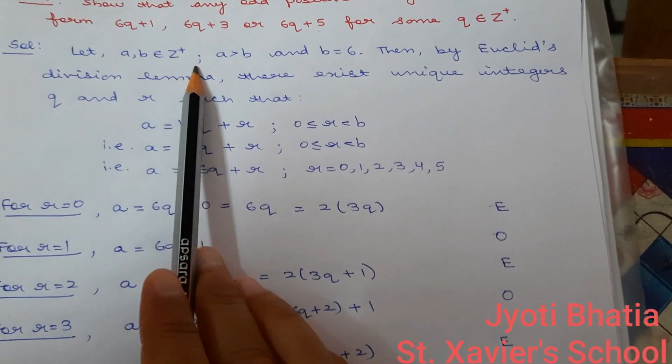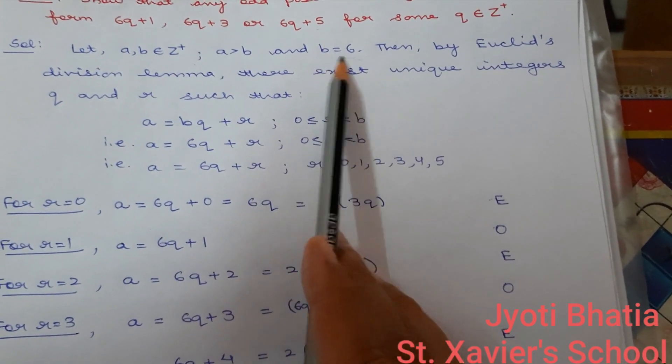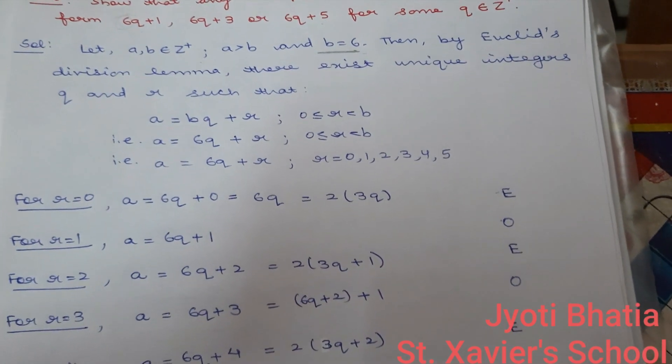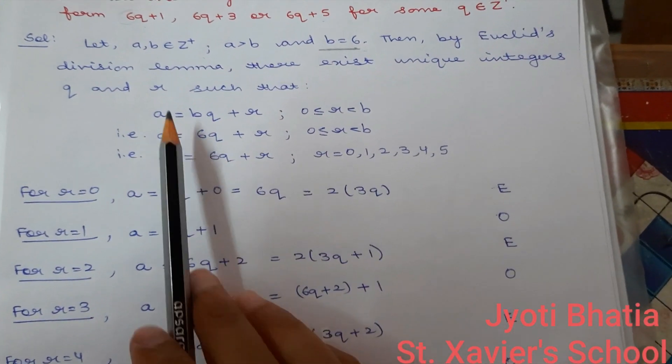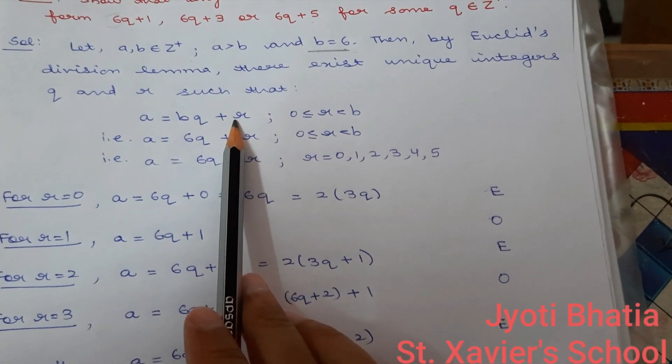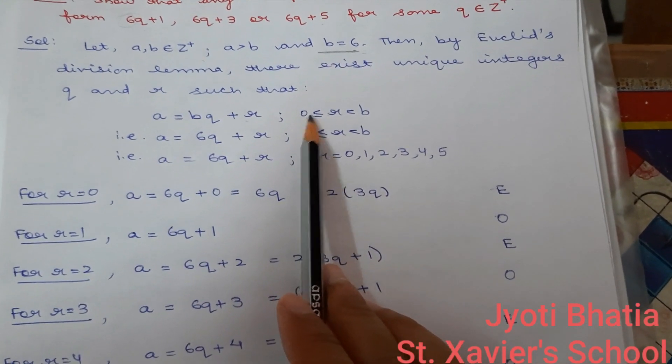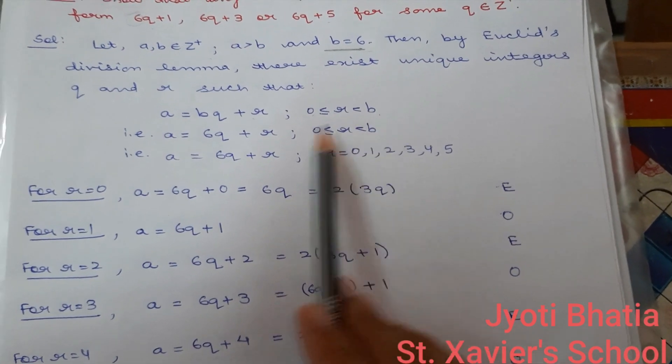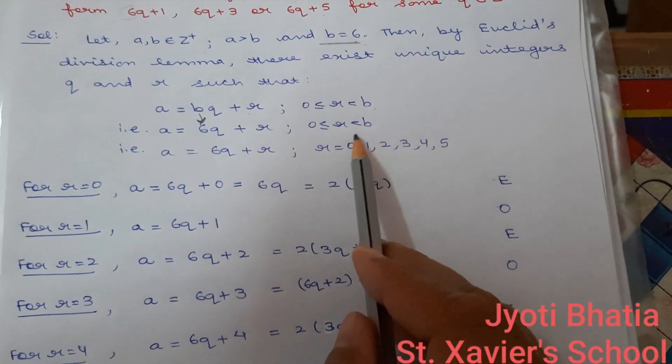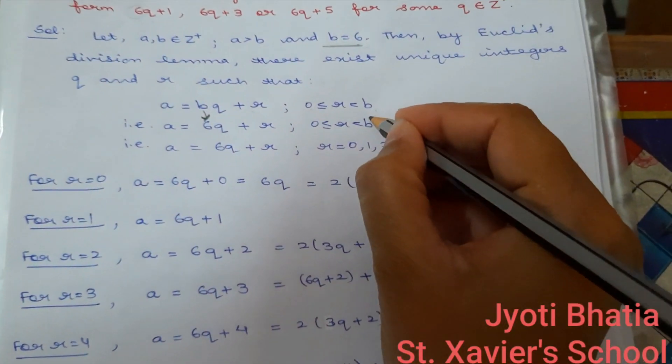Let A, B belongs to Z plus, A greater than B and B equal to 6 as we have to take 6 as our divisor here. Then by Euclid's division lemma, there will exist unique q and r such that A is equal to BQ plus R, R greater than equal to 0 less than B. Putting B equal to 6, we have these possible cases for the remainder.